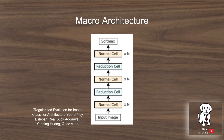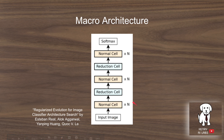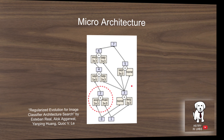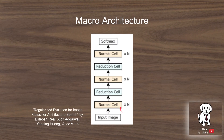Macroarchitecture is described in this image. You have the input image, and it will go through a predefined type of cell repeated n times, then another type of cell, and again the same one repeated n times. Overall it has a structure of three normal cells all repeated the same number of times, and a reduction cell. This is the space used in the NASNet neural architecture search space.